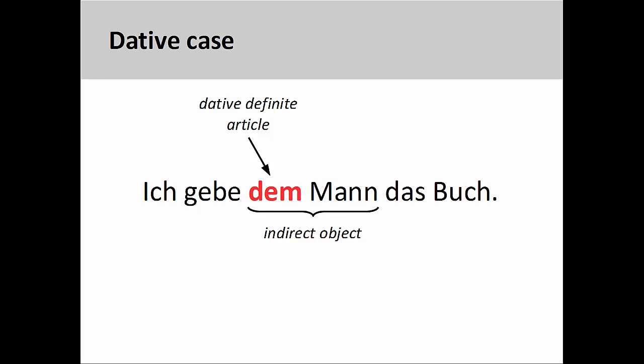The dative case is used in German to indicate the indirect object of the sentence. For example, 'Ich gebe dem Mann das Buch' — I give the book to the man. In other words, the dative case basically indicates to whom an action is performed.